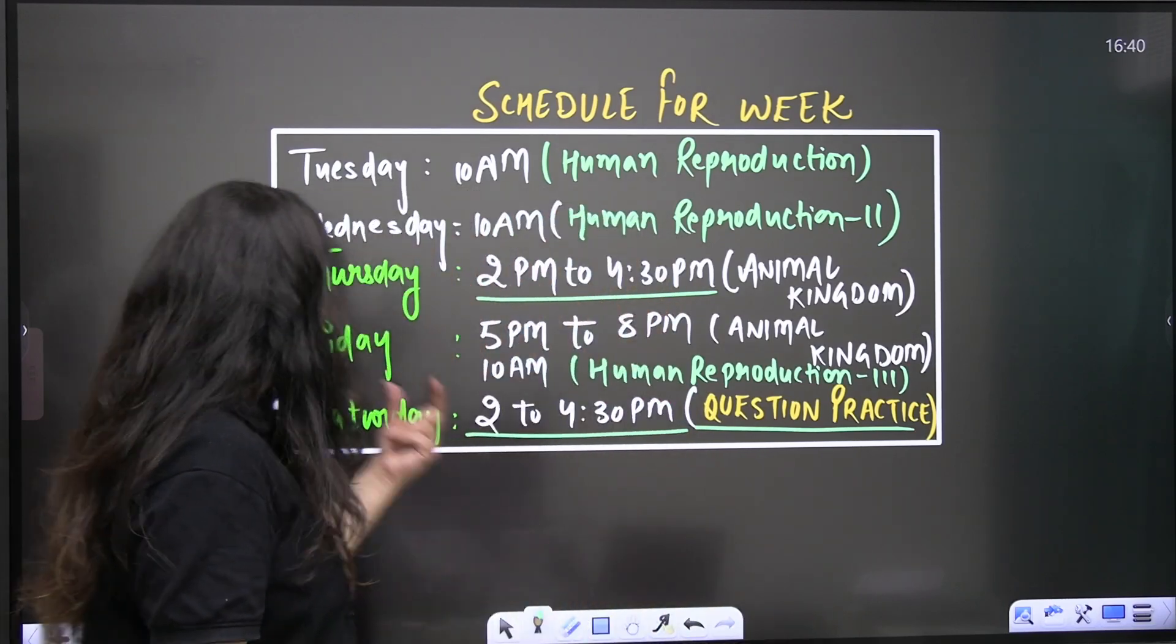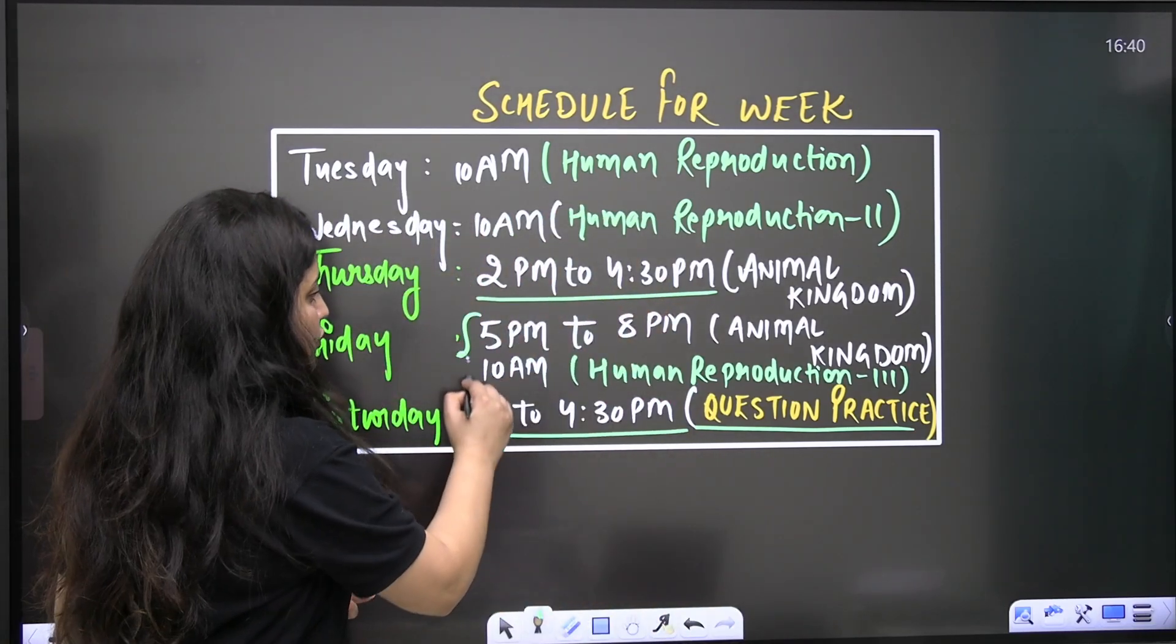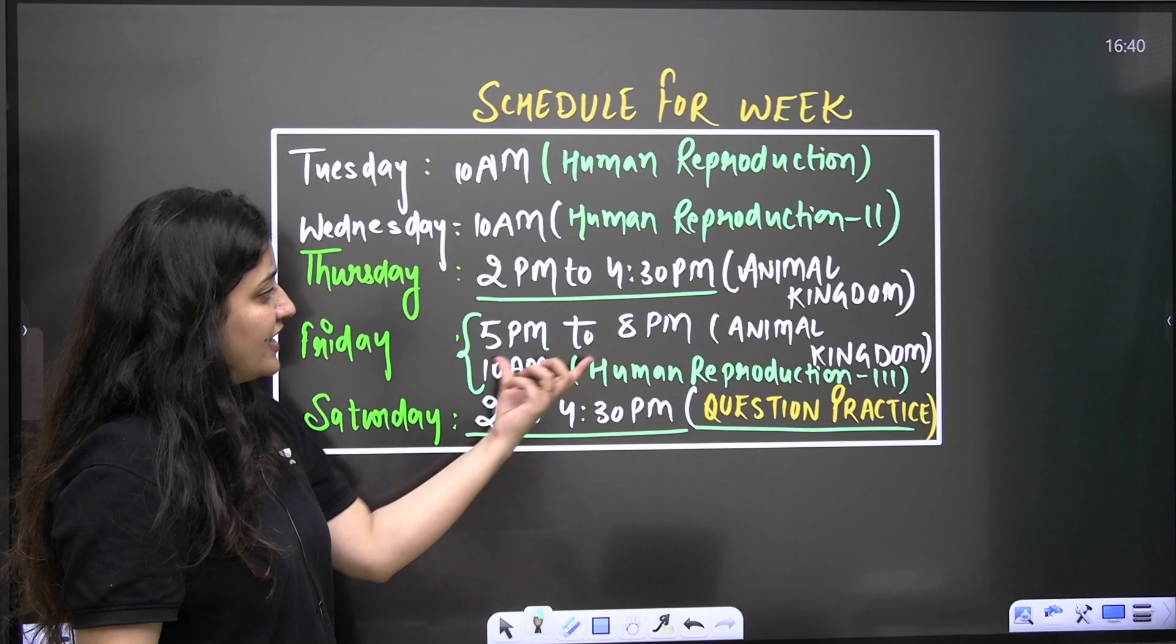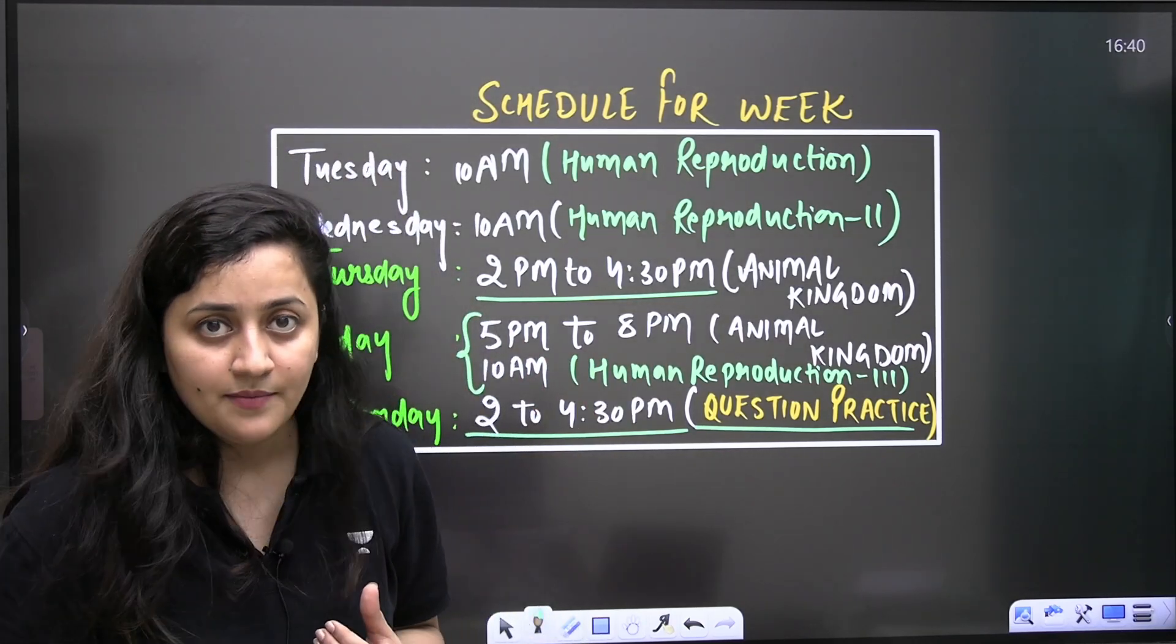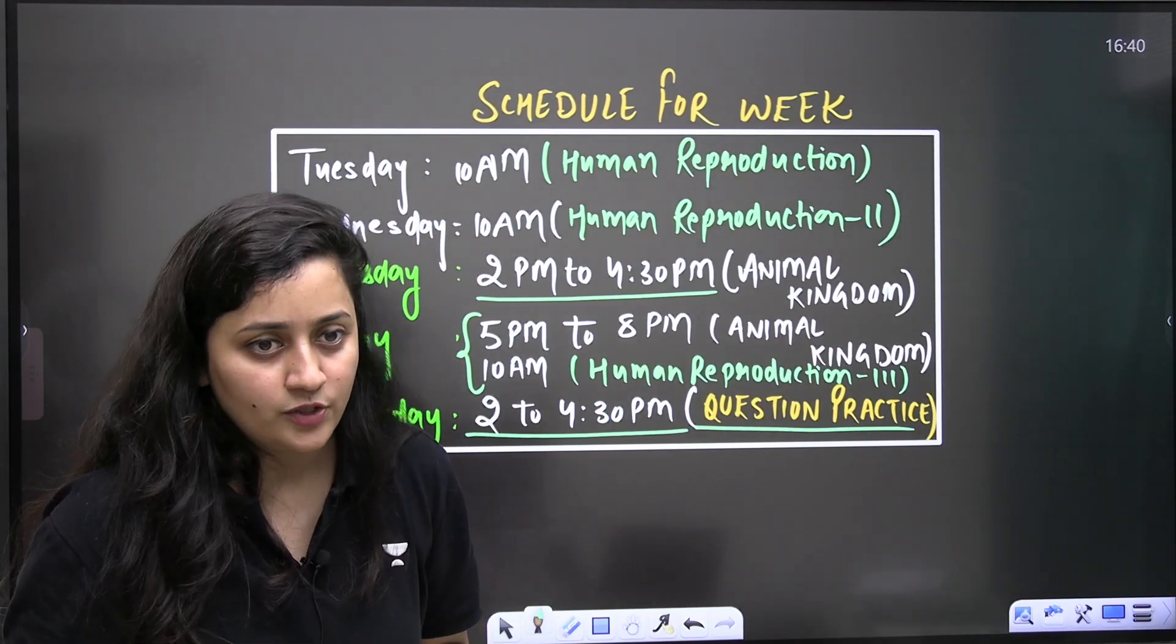And Friday, you will be having two classes, 5 p.m. to 8 p.m. Animal kingdom, 10 a.m. human reproduction. So this is the schedule for the next week. This is the schedule for the next week.